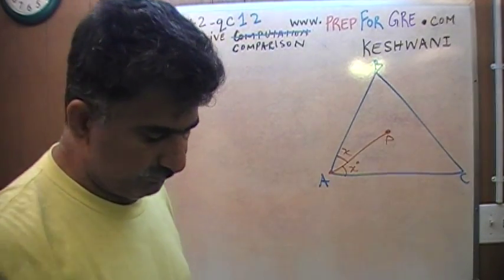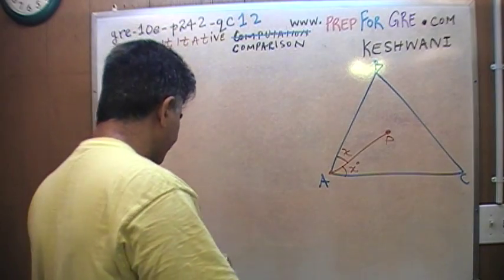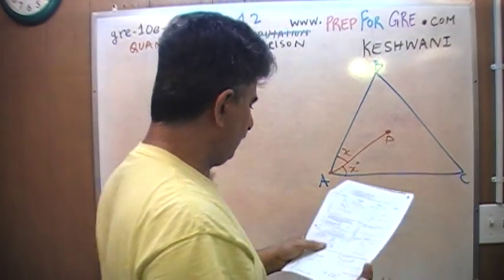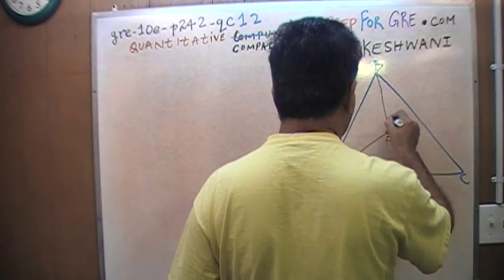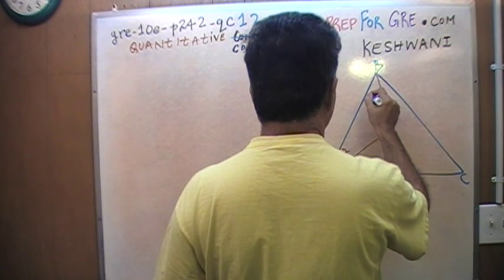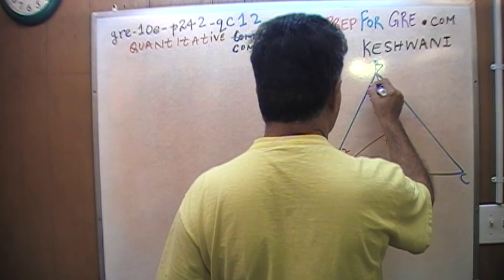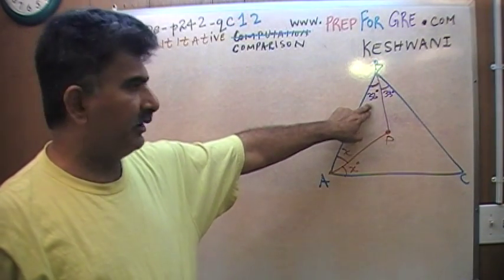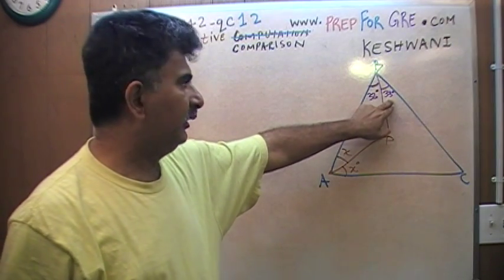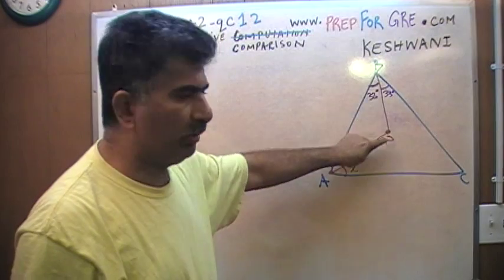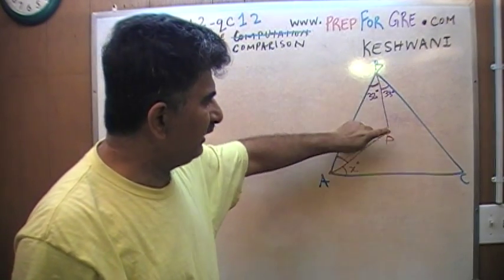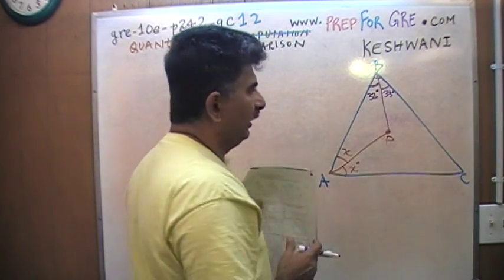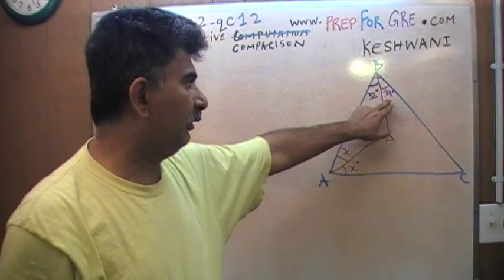Then they go on to say PB. Where is PB? PB is on the top there. I'm told that this part is 33 degrees. Well, if this is 33 degrees, then so is this one, because PB bisects angle B into two equal parts. Since PB cuts angle B into two equal parts, and one of those parts is 33, then the other also has to be 33.